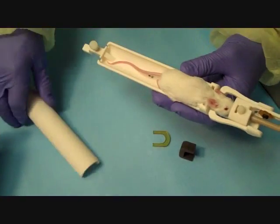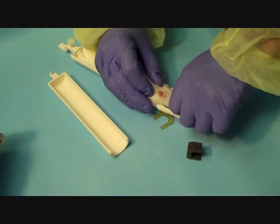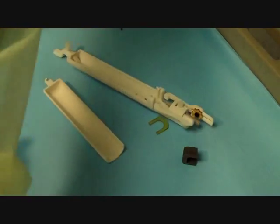To acclimate animals to the head restraint and imaging protocol, they undergo several simulated or mock imaging sessions before the day of the experiment. Shown are T2 weighted multi-slice fast spin echo images.